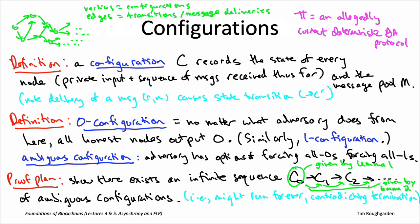The proof proceeds by contradiction. We assume there is some allegedly correct Byzantine agreement protocol pi, and we want to derive a contradiction. The plan is to show that by virtue of satisfying validity and agreement upon termination, there must be cases in which the protocol never terminates — that there is a possible sequence of message deliveries so that the protocol never halts at all. The precise way we show this is to exhibit an infinite sequence of ambiguous configurations.